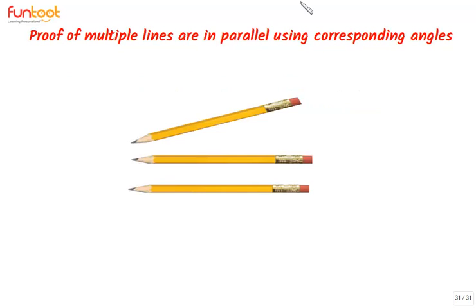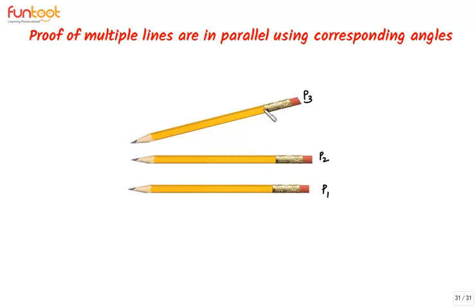Let's understand the problem using real-life objects. Here we have three pencils P1, P2, and P3. We can see that P1 is parallel to P2, but P2 is not parallel to P3, so we cannot say that P1 is parallel to P3.